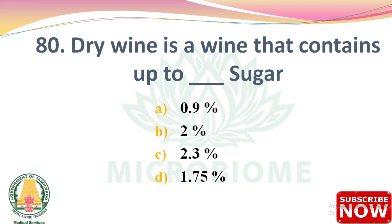Next question: dry wine is a wine that contains up to dash sugar — options: 0.9%, 2%, 2.3%, 1.75%. The right answer is Option A: 0.9%.